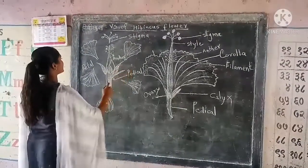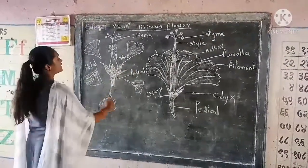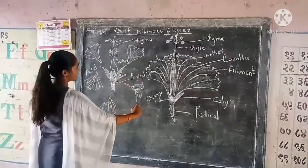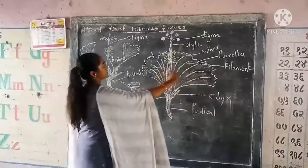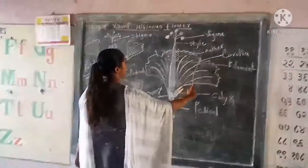This is a stigma. This is an anther. This is a petal. This is a sepal. This is a stigma. This is a style. This is an anther.